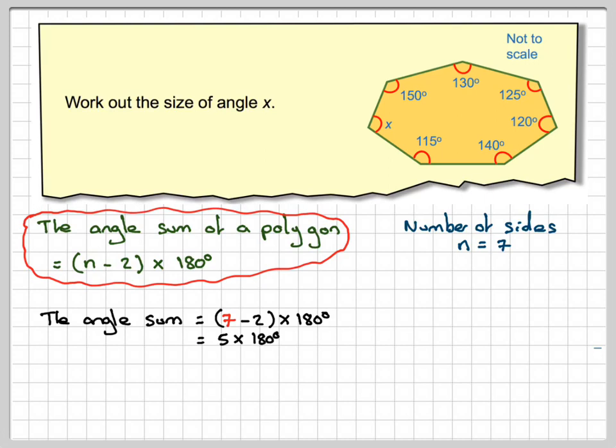so it's going to be 5 times 180, which is 900. So we know that all these angles here add up to 900.